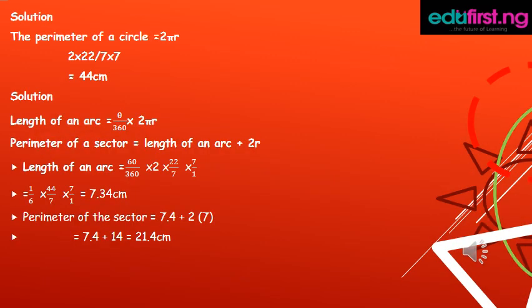The perimeter of a circle is equal to 2πr. 2 times 22/7 times 7 equals 44 cm.